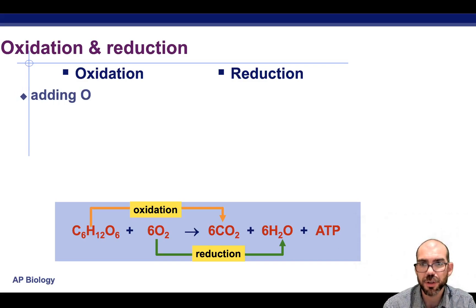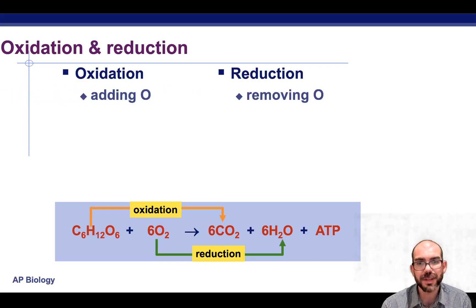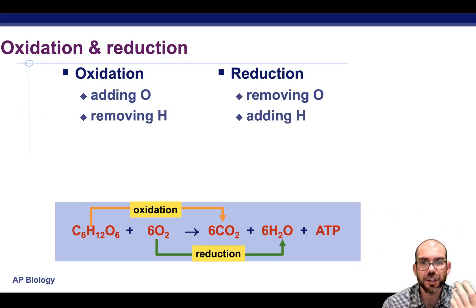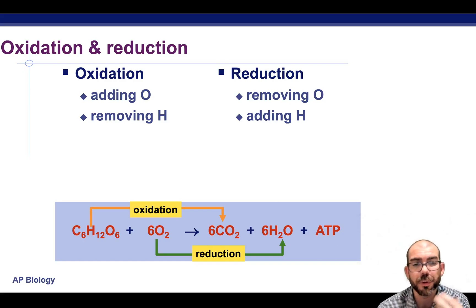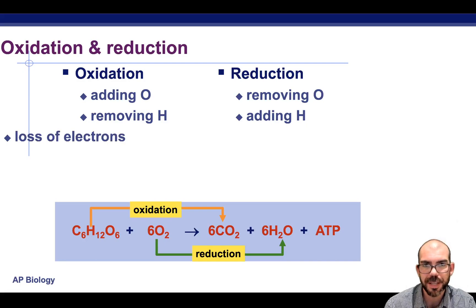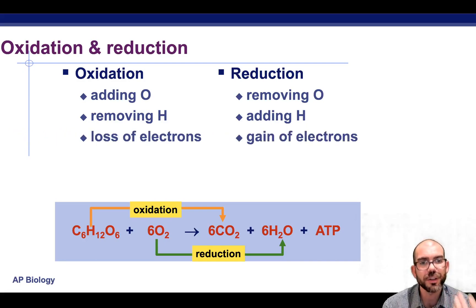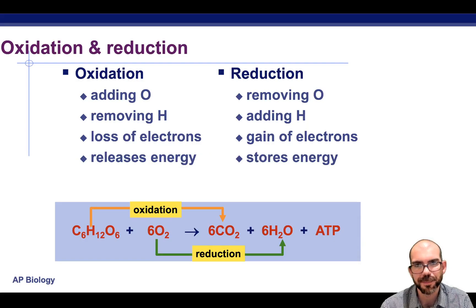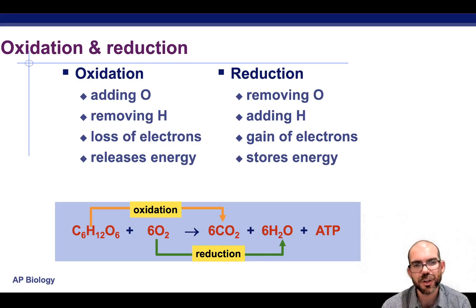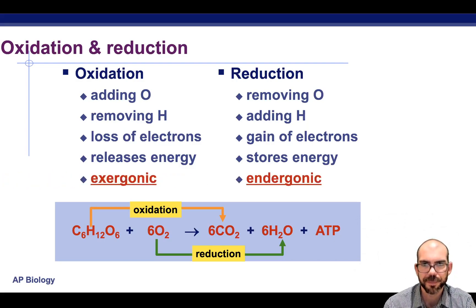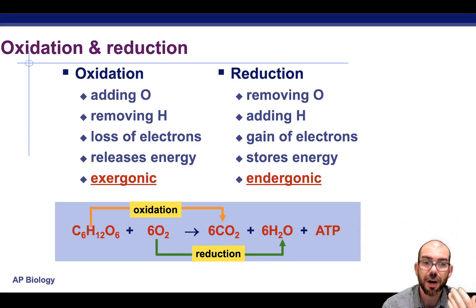As a summary of these terms: for an oxidation, it could be something such as adding an oxygen or removing a hydrogen — oxidation is losing electrons. With reduction, we'd be adding a hydrogen or gaining an electron. We have a release of energy when losing electrons during an oxidation, and we're storing energy when forming bonds with a reduction. That's why we say oxidations are exergonic and reductions are endergonic.